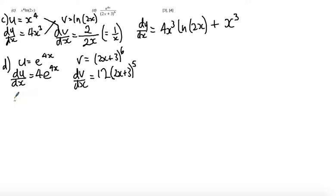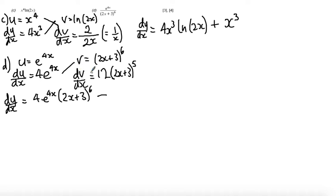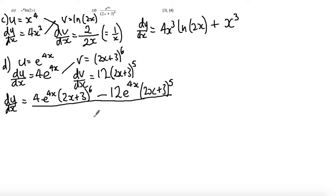Using the quotient rule — remember it is in the formula booklet — dy by dx equals v du minus u dv, all over v squared. So the numerator is 4e to the 4x times (2x plus 3) to the power of 6, minus 12e to the 4x times (2x plus 3) to the power of 5. This is all over (2x plus 3) to the power of 12.